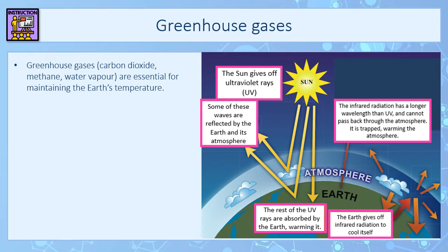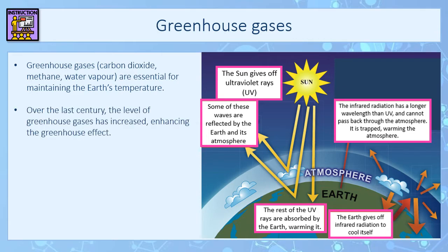Greenhouse gases — carbon dioxide, methane, water vapour — are all essential for maintaining the earth's temperature at a level that can sustain life. Over the last century the level of those greenhouse gases in the atmosphere has increased, which enhances the greenhouse effect. Those greenhouse gases absorb infrared radiation in the atmosphere, causing the temperature to increase.